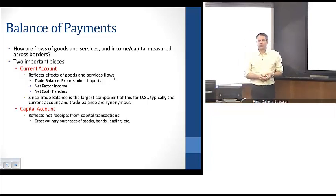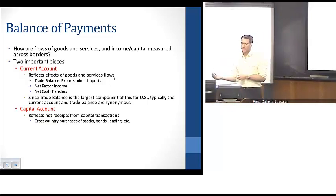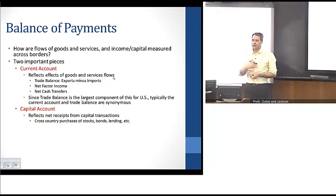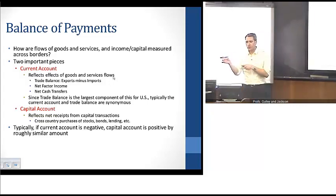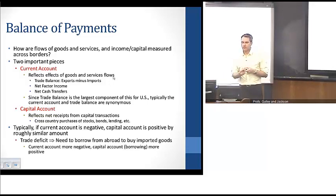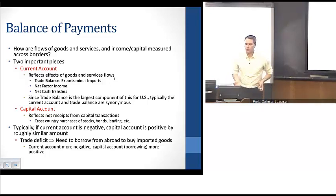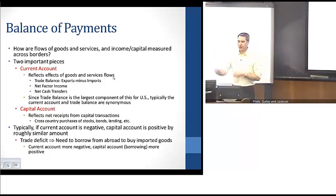The capital account represents the flow of income, wealth, lending, and other forms of capital across borders — cross-country purchases of stocks, bonds, and lending — essentially the net receipts from capital transactions. Intuitively, these two accounts are linked: if a country runs a trade deficit, the current account will be negative, and the capital account will be positive by a roughly similar amount. Running a trade deficit means you need to borrow from abroad to pay for imported goods — a more negative current account requires more borrowing and a higher, more positive capital account.